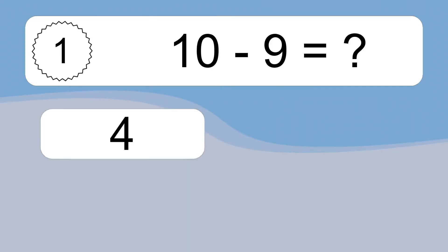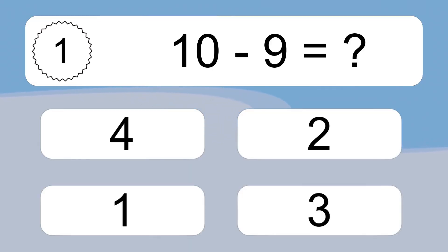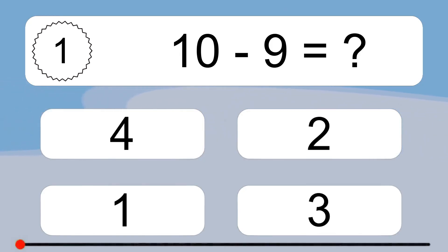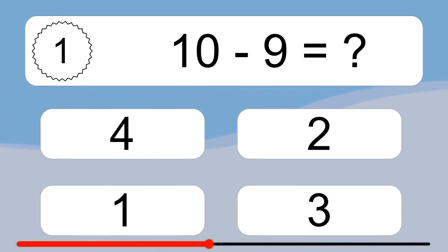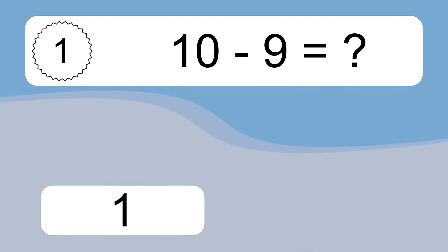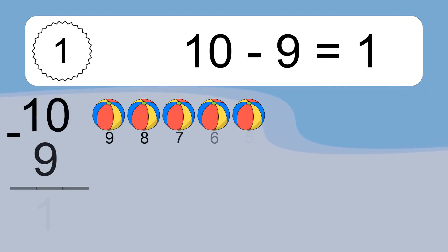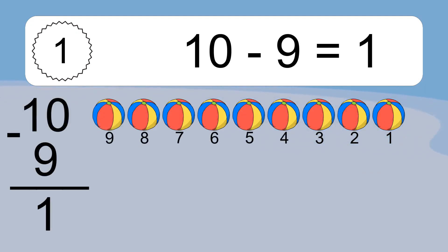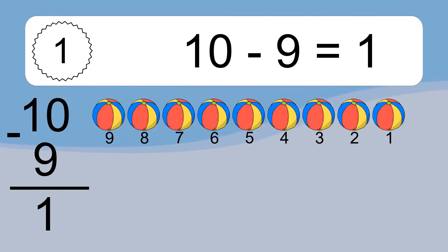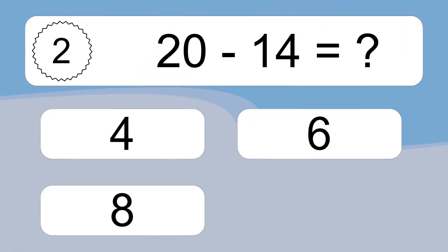10 minus 9 equals what? 10 minus 9 equals 1. Let's count it: 9, 8, 7, 6, 5, 4, 3, 2, 1.